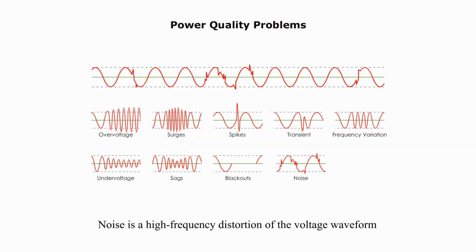Noise is a high-frequency distortion of voltage waveform caused by disturbances related to the electromagnetic interference or radio-frequency interference.